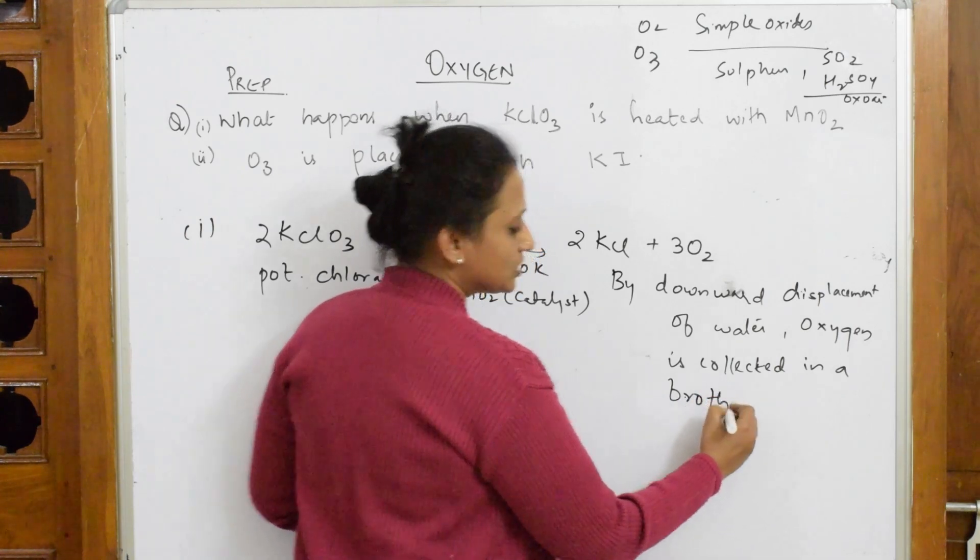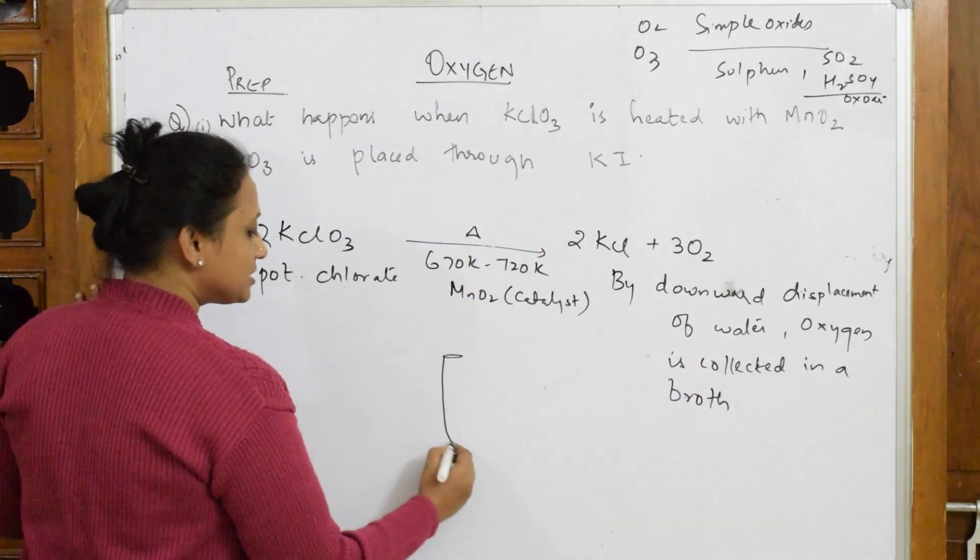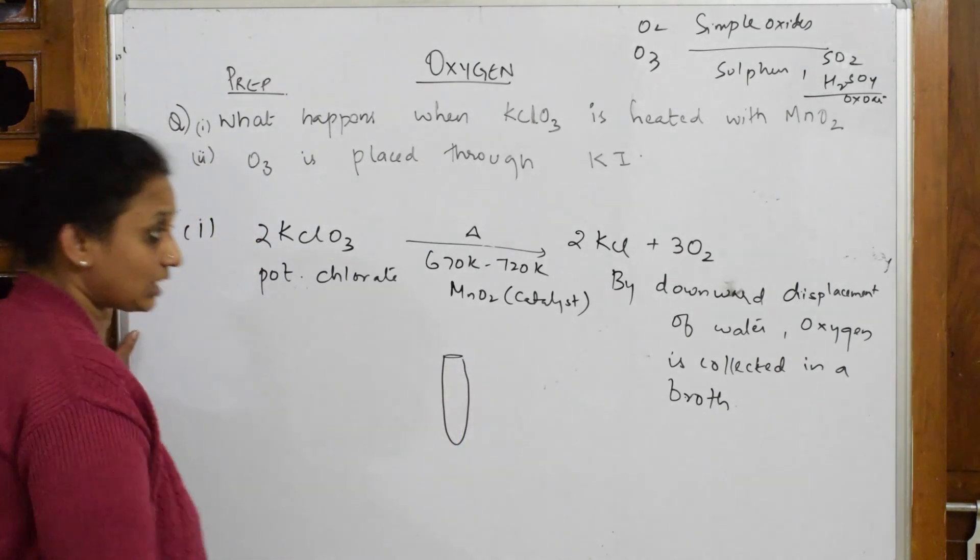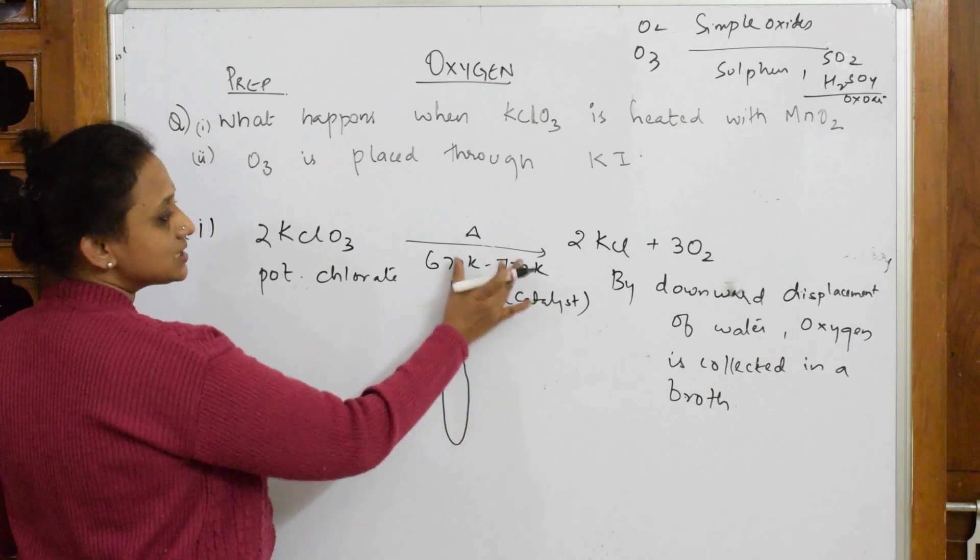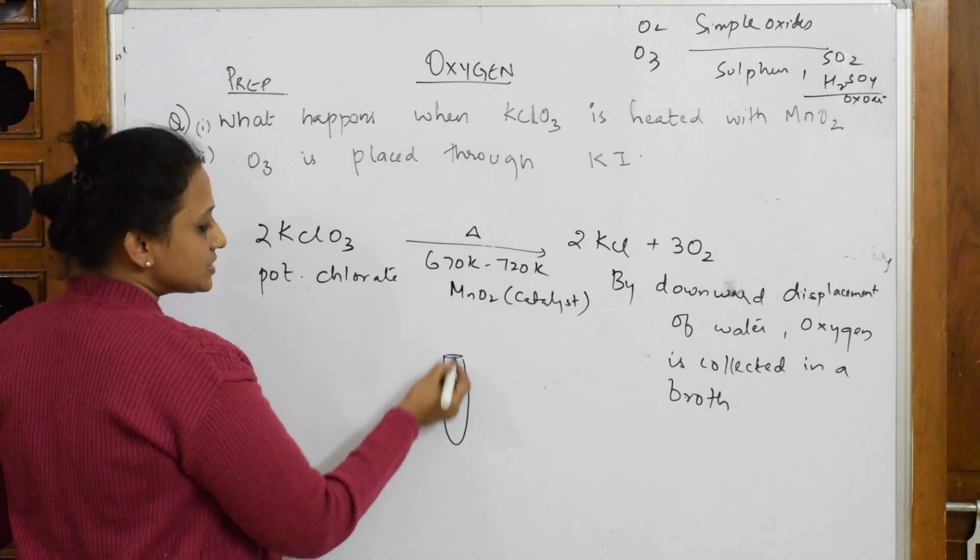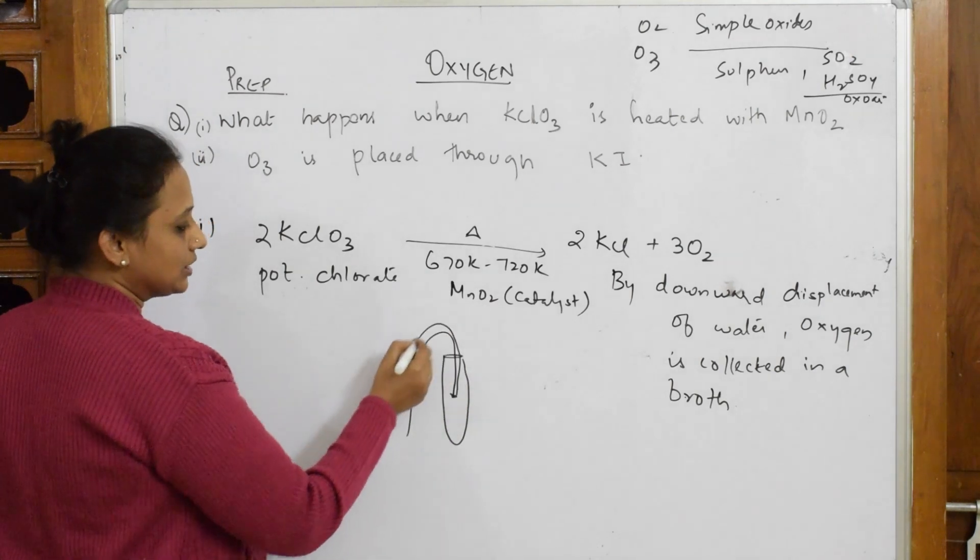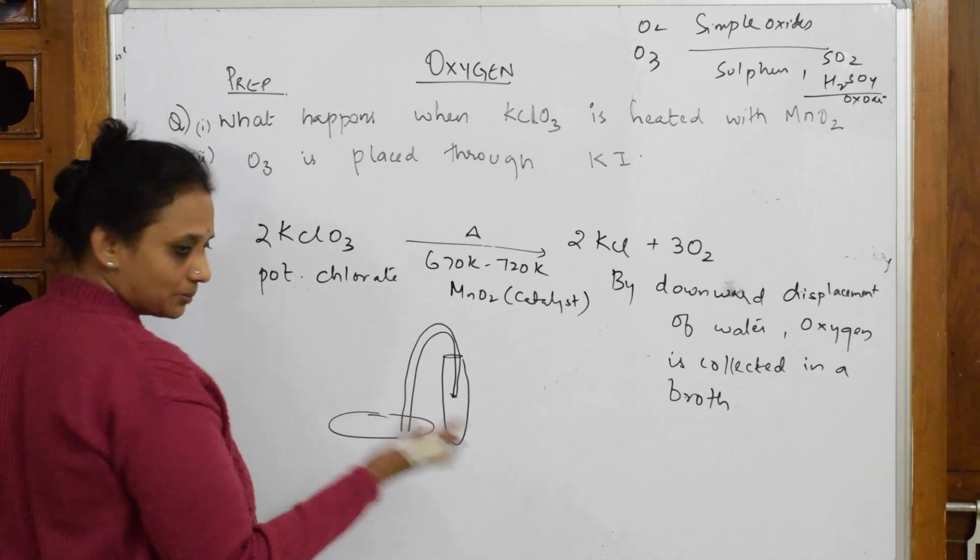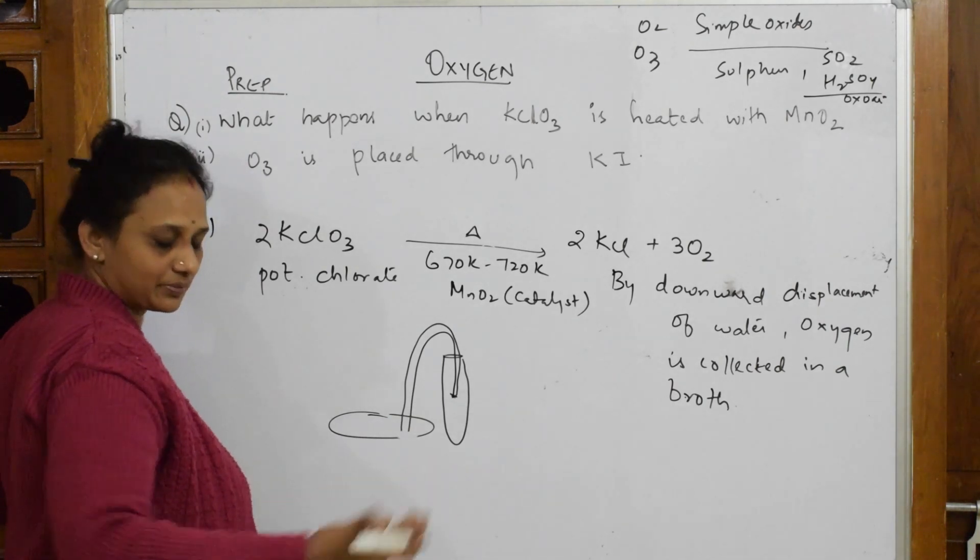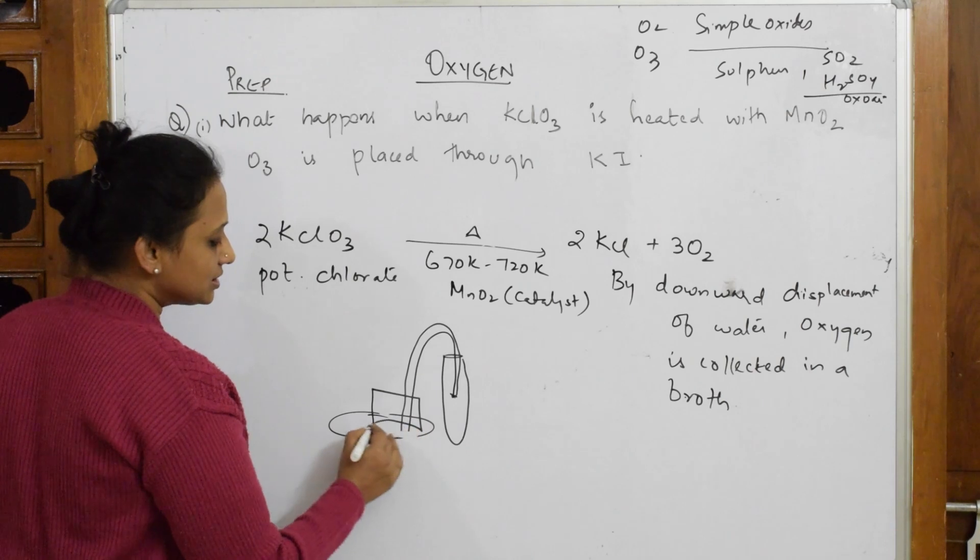How does this look? You're going to be performing the reaction. You're taking this potassium chlorate, heating it. The oxygen gets released. Now what do you do? You take a delivery tube like this. You take a beaker and invert it in water.